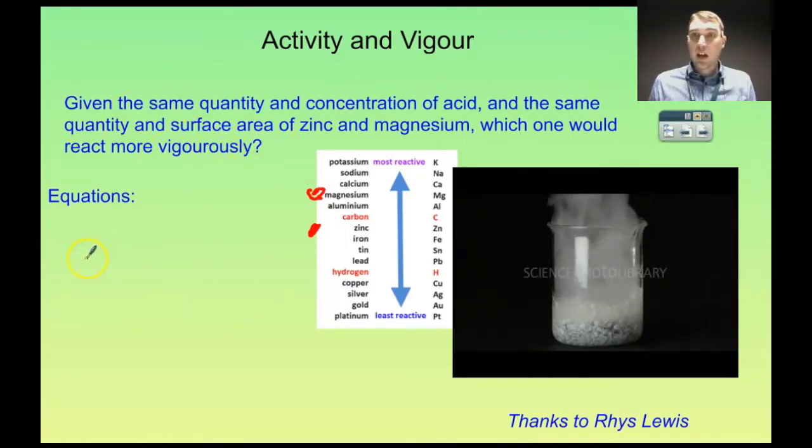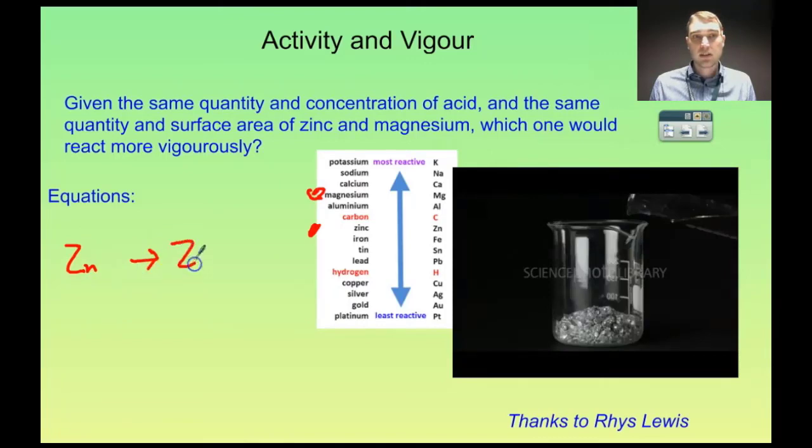So let's write the reaction of zinc with the acid as half equations. The zinc starts off as solid zinc and that goes to zinc ions. We do make a salt so the positive part of the salt is the zinc ions. Now zinc makes 2+ ions and to balance that out we need two electrons. So we've got zinc making zinc ions and two electrons.